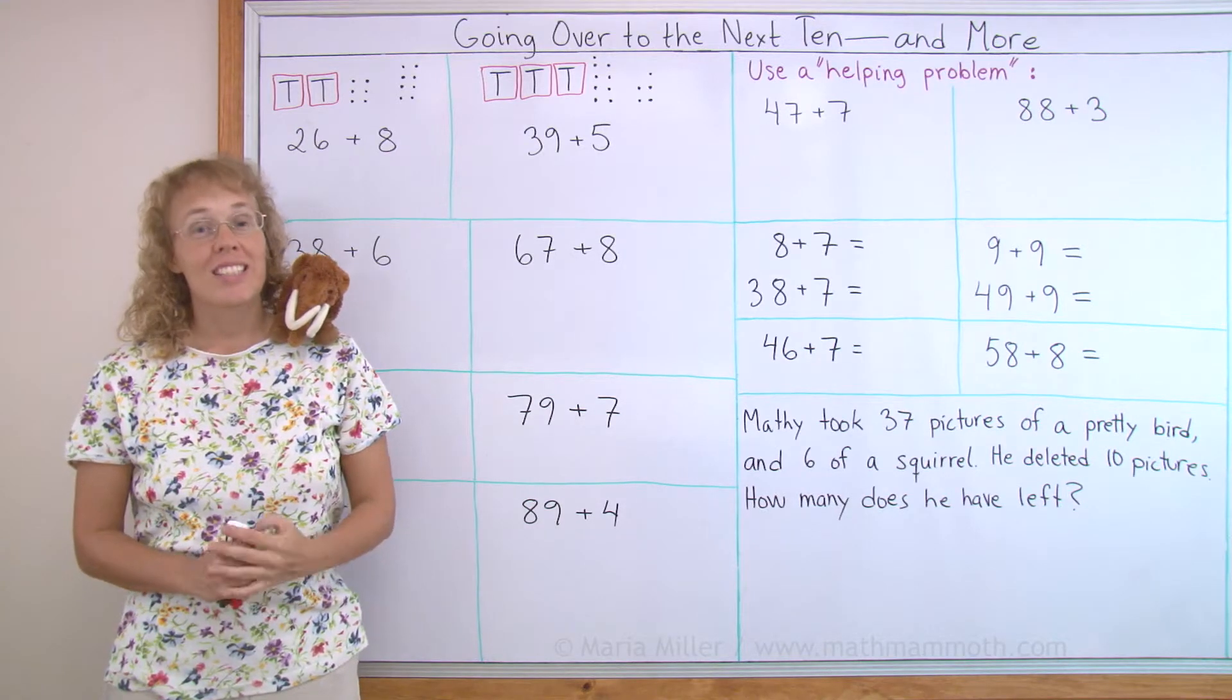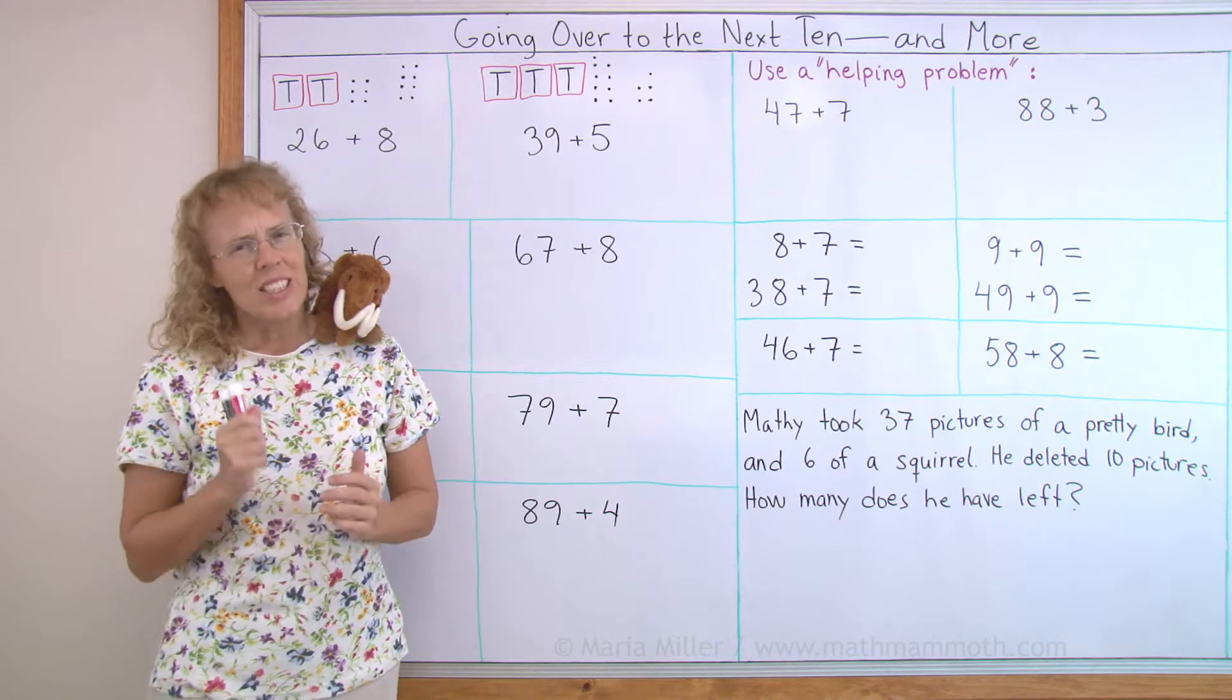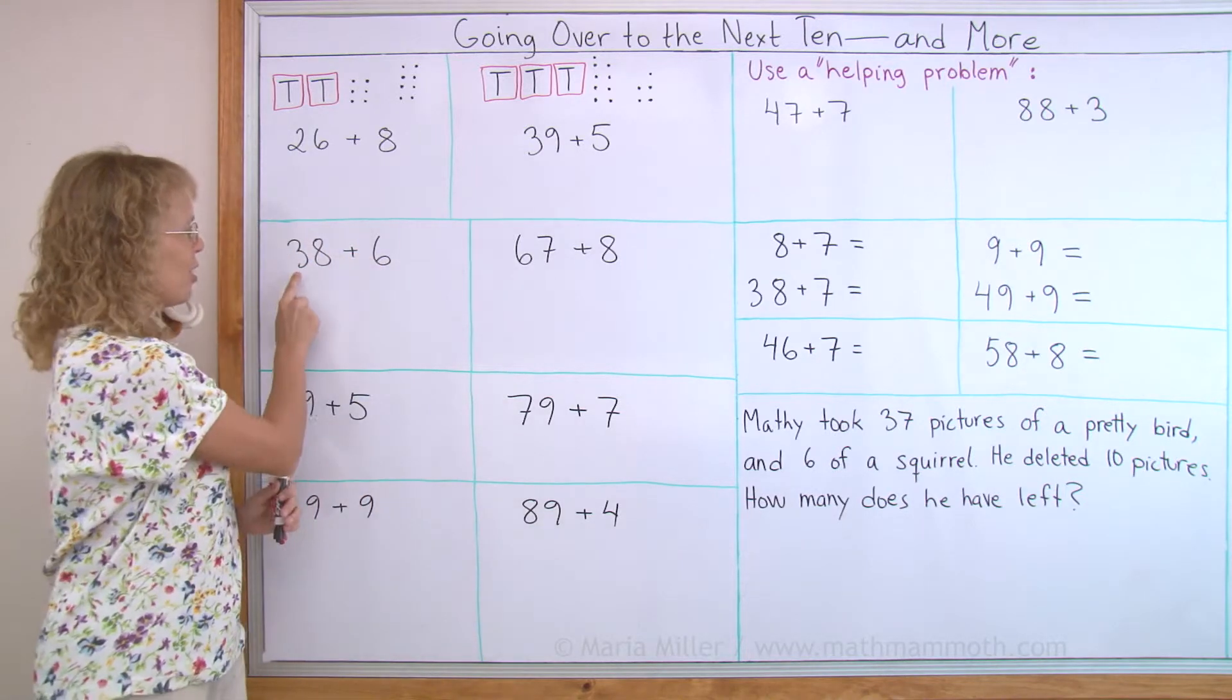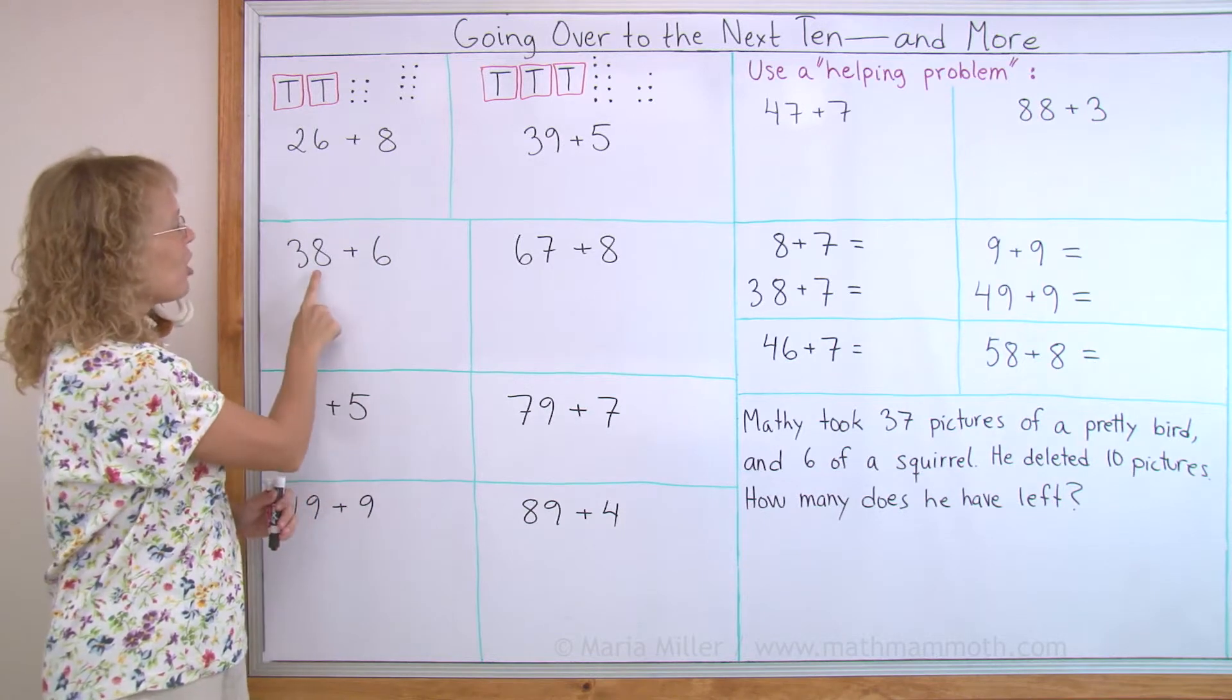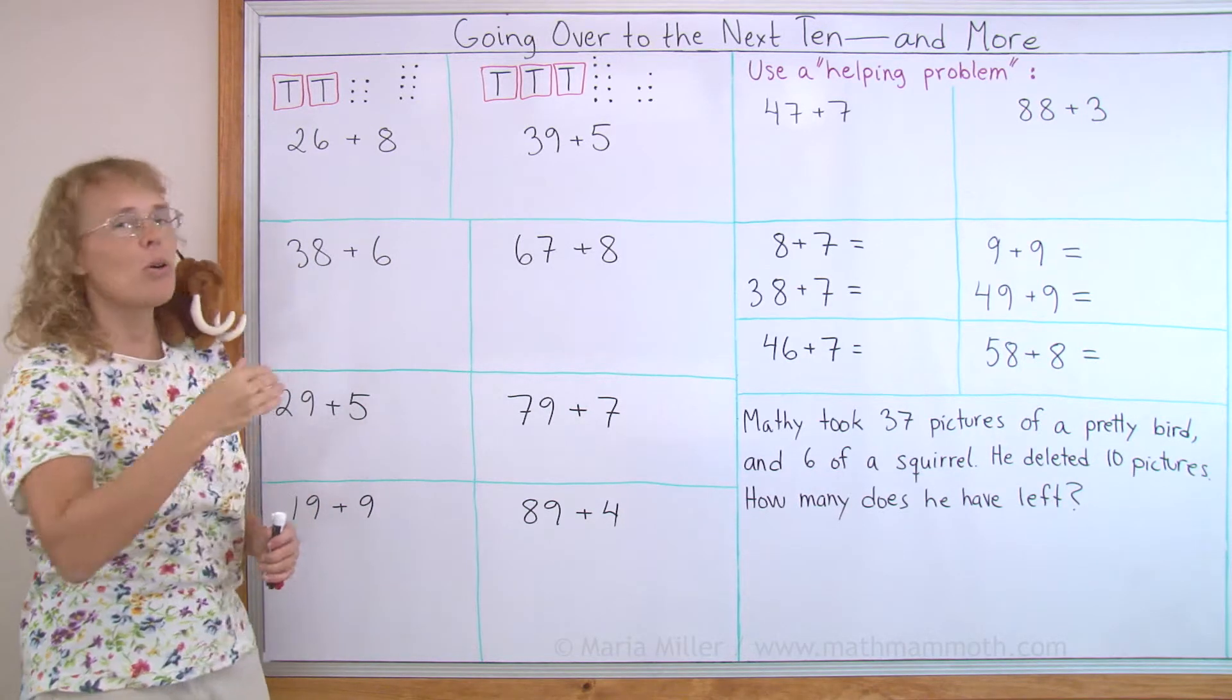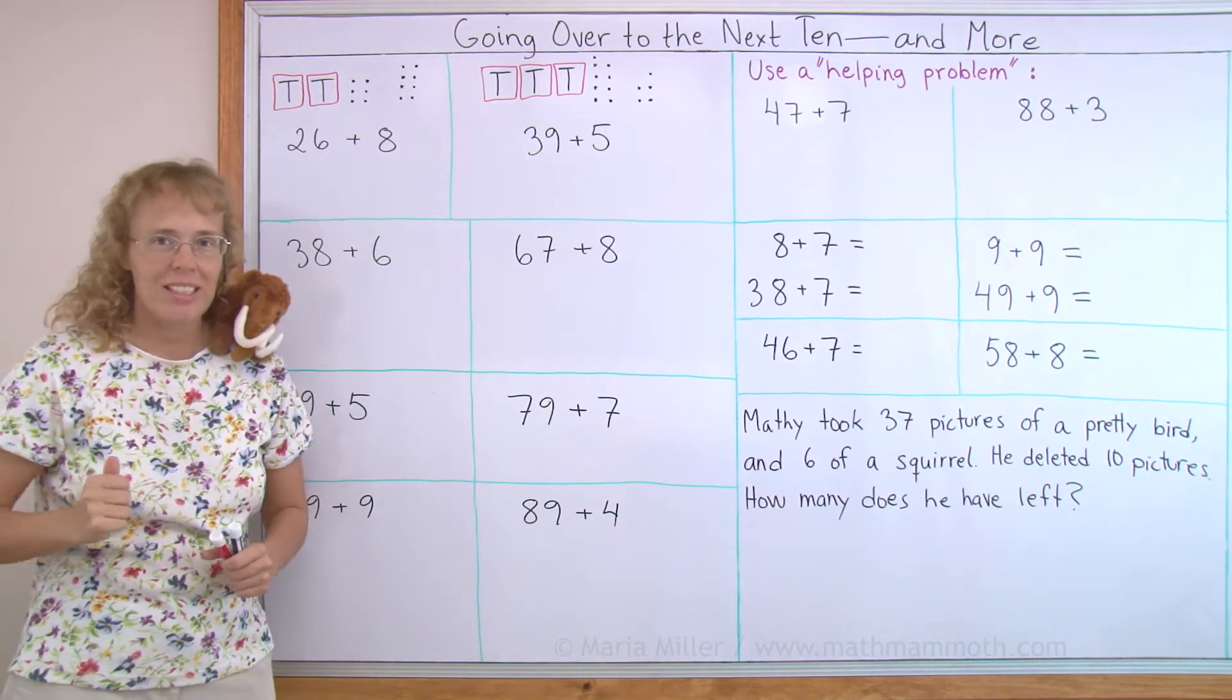In this lesson we are going to study additions that go over to the next 10. Specifically, we are adding a two-digit number and a single-digit number, but so that the sum, the answer, will go over to the next 10. Let's look at some examples to make this clear.